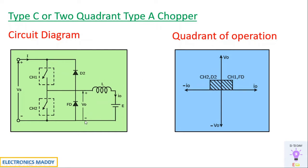So how do we justify that? If you carefully observe, if chopper 2 is conducting or the freewheeling diode is conducting, the voltage at this point is short-circuited, so it will be zero. Otherwise, if CH1 is conducting or D2 is conducting — especially when CH1 is conducting — current is delivered in this particular direction. Consequently, the voltage will be positive. As a result, we say the voltage is always positive.